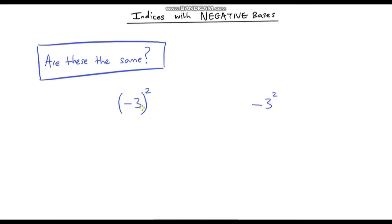The first thing I want you to ponder is: are these two things the same? Here we've got negative 3 in brackets and that is being squared. And here we don't have the brackets, so this just says negative 3 squared. Are they the same? Those with good instincts are probably thinking no — and you are correct, these are not the same.